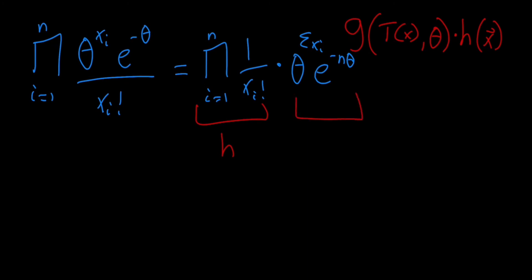And then this here is a function of our parameters, but also a statistic t of x, which we see is the sum of the xi. So I'm going to call this our g.